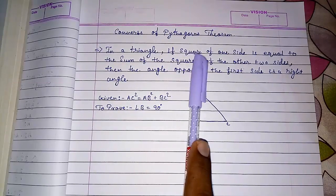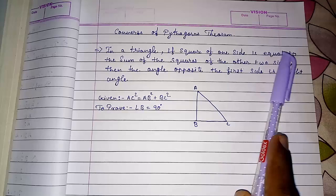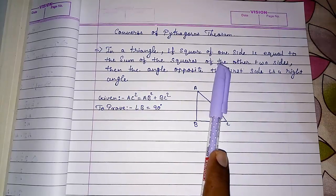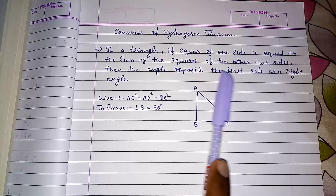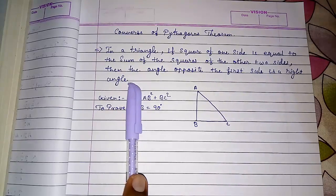In a triangle, if the square of one side is equal to the sum of squares of the other two sides, then the angle opposite the first side is a right angle.